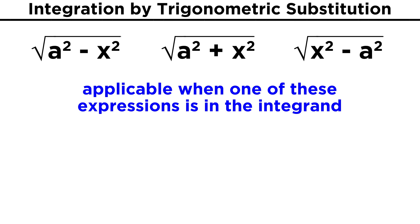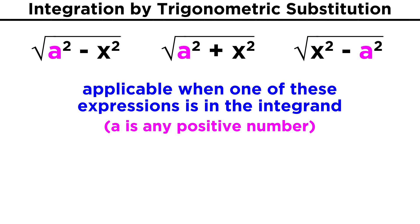Trigonometric substitution is a technique that works when one of three very specific terms is present in the integrand. These are the square root of a squared minus x squared, the square root of a squared plus x squared, or the square root of x squared minus a squared. Here, a can be any positive number.